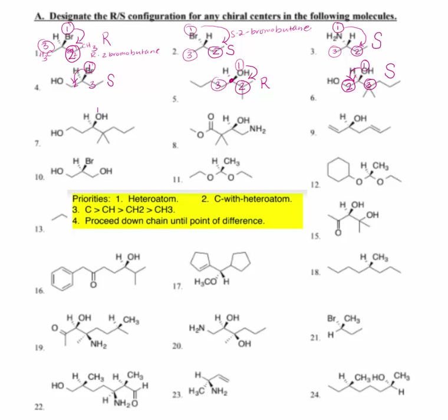For number seven, CIP priority number one is the oxygen. The hydrogen is in the rear — it is CIP priority number four. Here I have a CH2, and here I just have a C. C has a greater priority than CH2. That means this side is number two priority, and this side is priority number three. I am rotating clockwise. That makes this an R configuration.